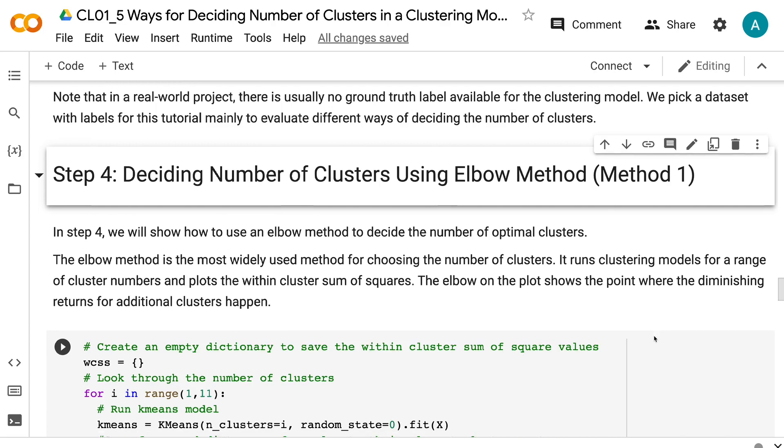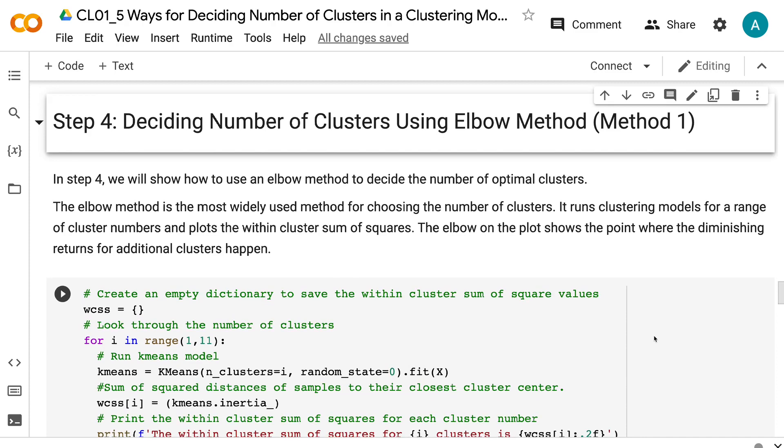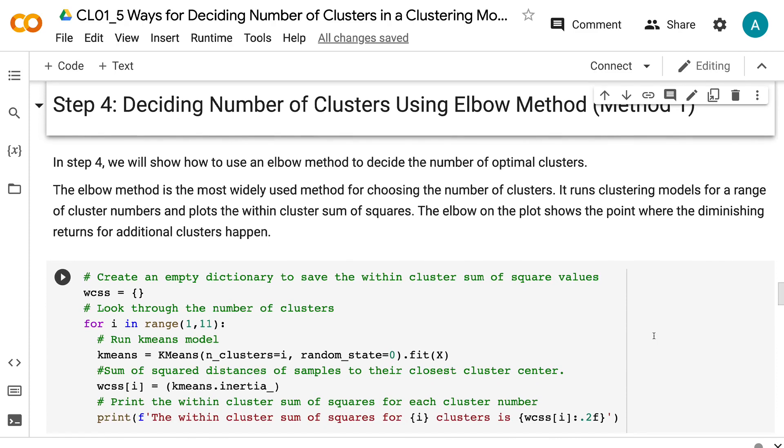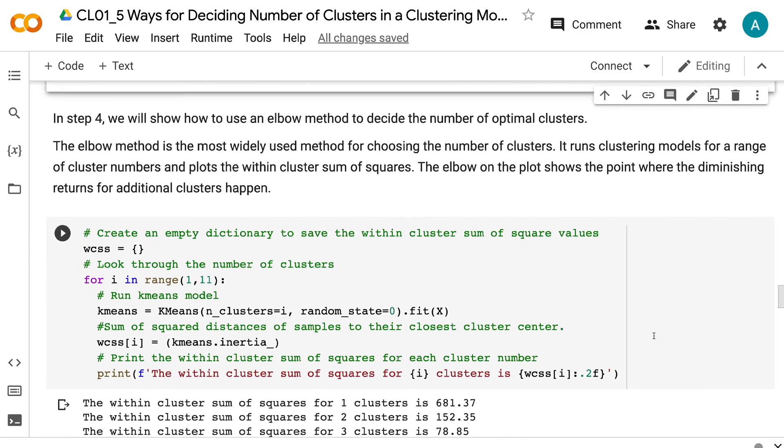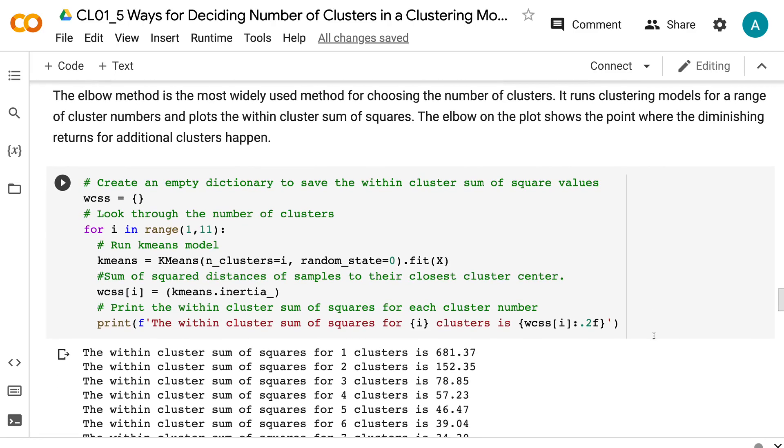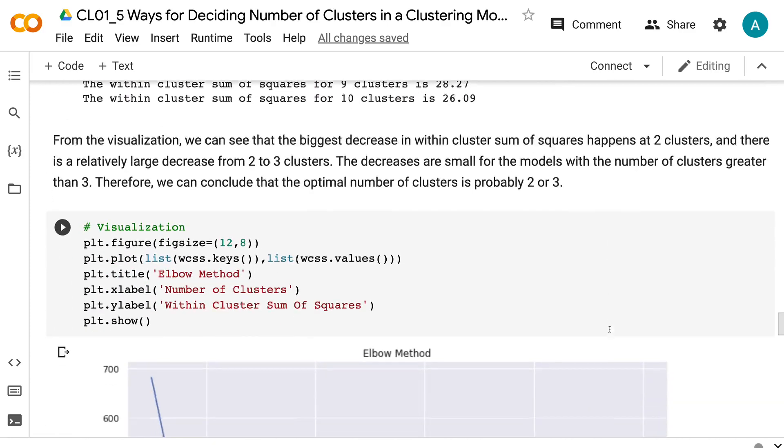In step 4, we will show how to use an elbow method to decide the number of optimal clusters. The elbow method is the most widely used method for choosing the number of clusters. It runs clustering models for a range of cluster numbers and plots the within-cluster sum of squares. The elbow on the plot shows the point where the diminishing returns for additional clusters happen.